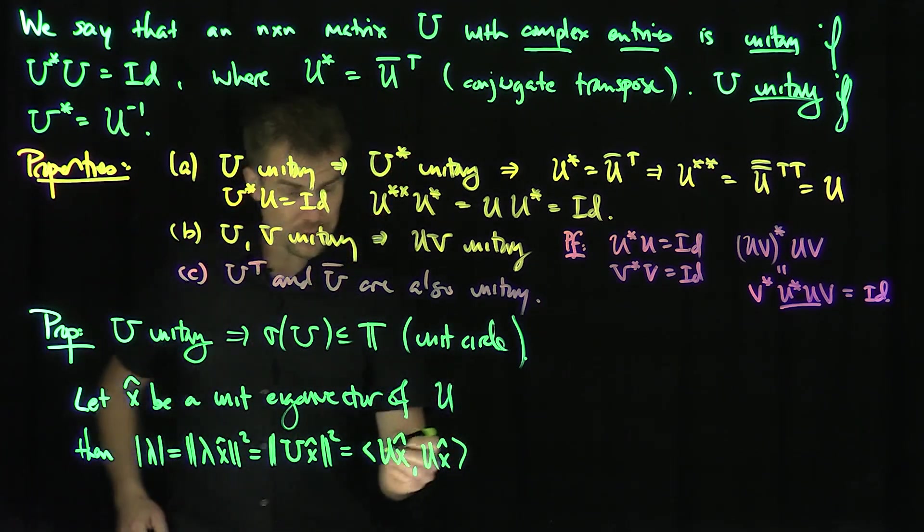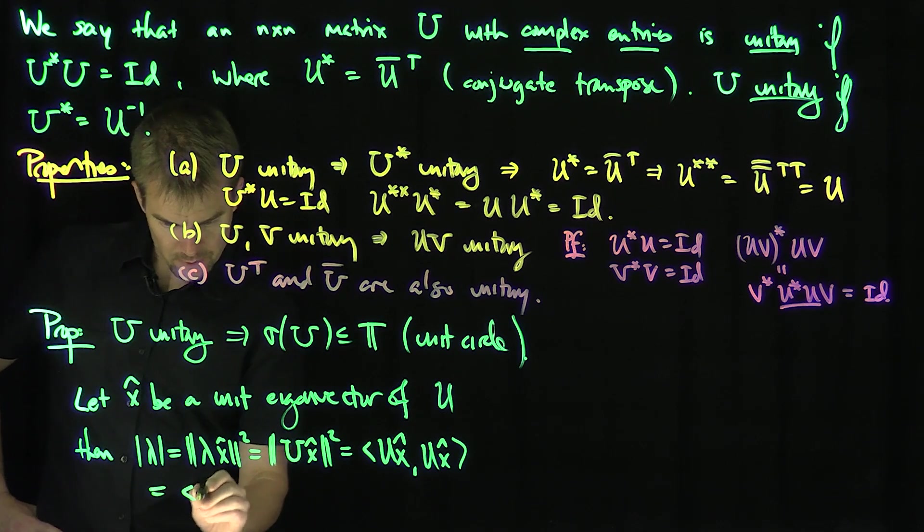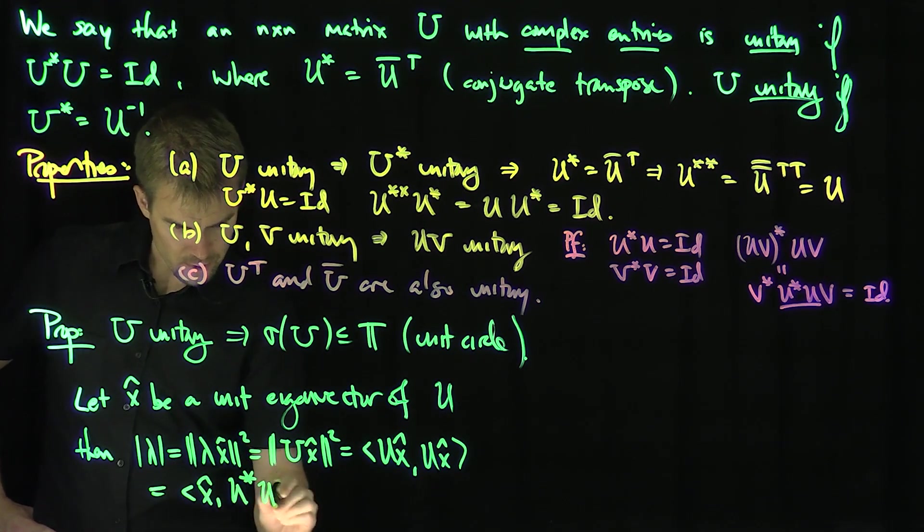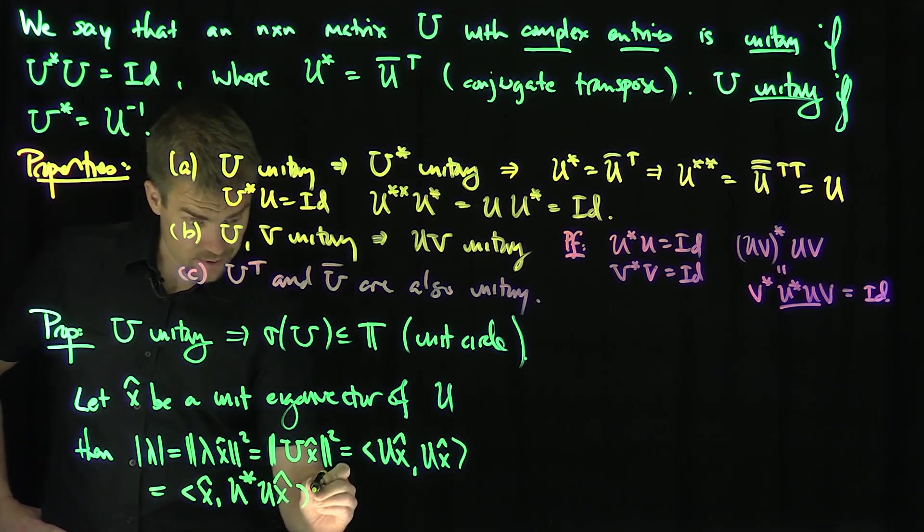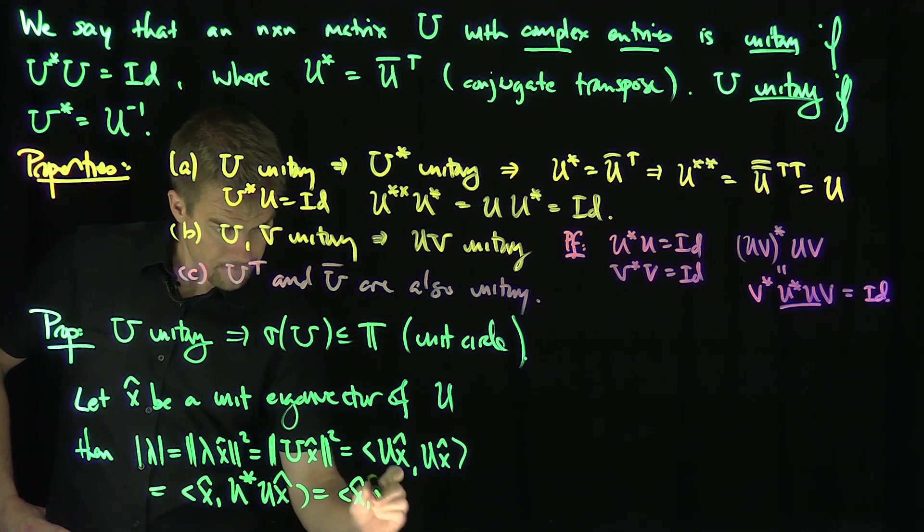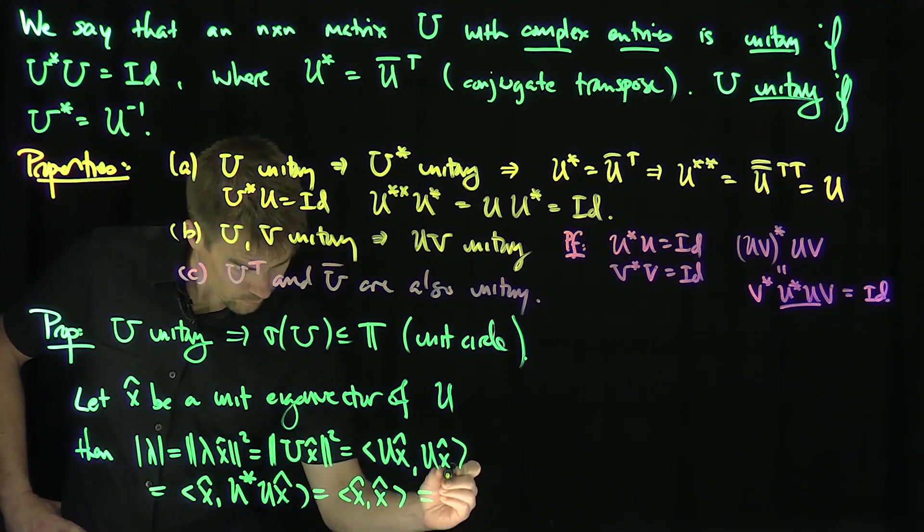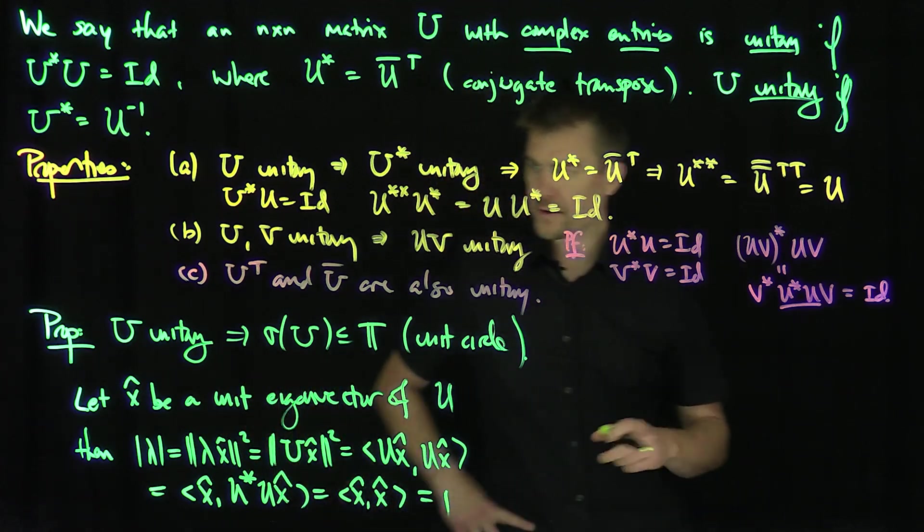And so now what can I say? Now I can put the U, so that's equal to X hat with U star, U X hat. But that's the identity, so it's just X hat X hat. And X hat X hat is equal to one by assumption, so the modulus of lambda is equal to one.